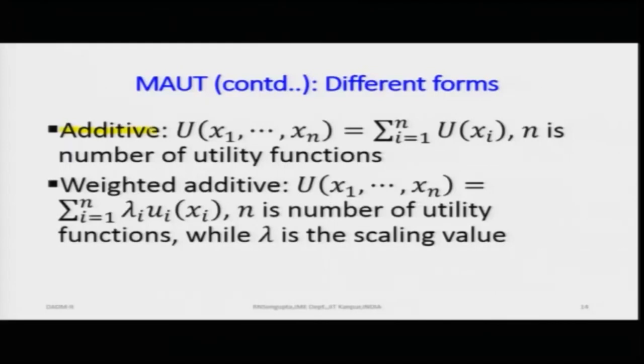For the utilities of a combination of vector x — where x consists of x1 to xn depending on n dimensions, or x1 to xk for k dimensions — if we can express the whole utility as the sum of the utility functions for each attribute individually, then we have the additive utility function.